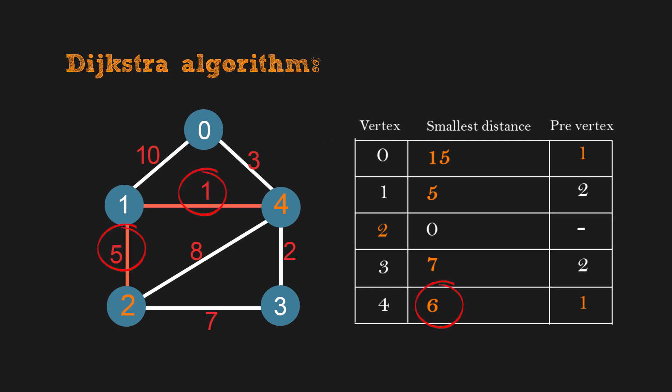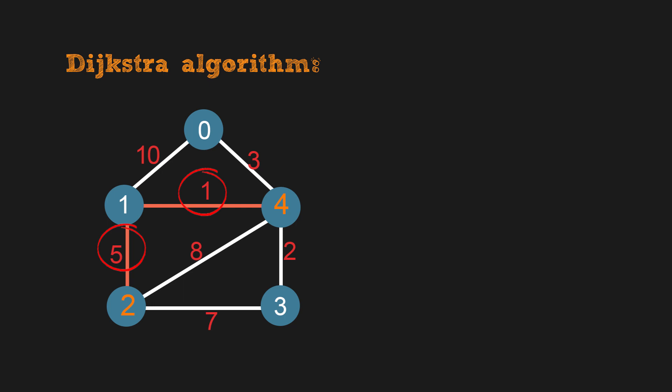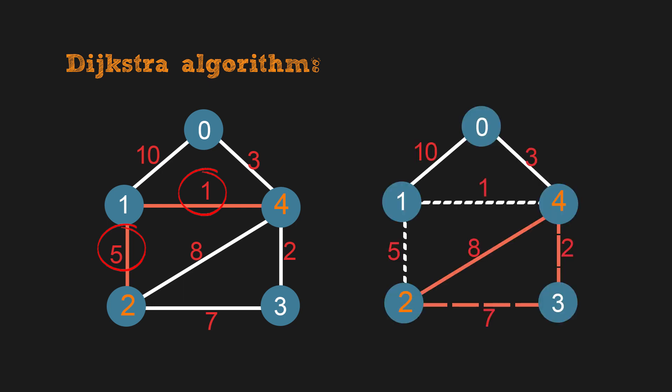To find the second shortest distance, the idea is to remove each edge in the shortest path, call Dijkstra again. The smallest value will be the second shortest distance. It is 8 in our case.